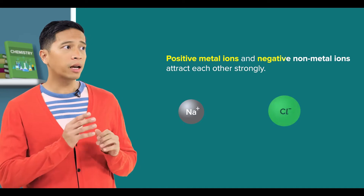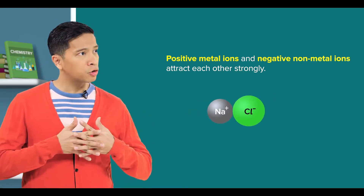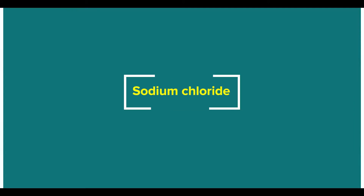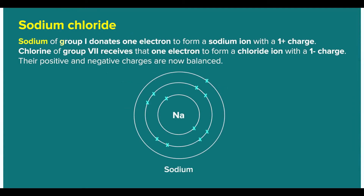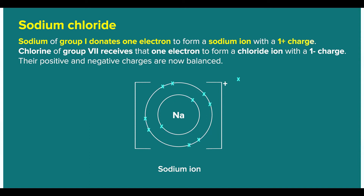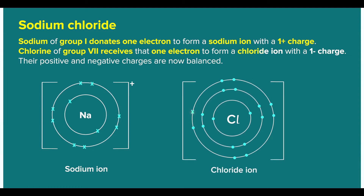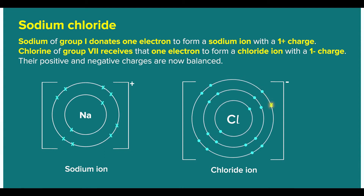Moving on, do you remember how ions interact with each other? I remember that positive metal ions and negative non-metal ions attract each other strongly. Good. Let's refresh our memory a little. Let's use sodium chloride as an example. Sodium of group 1 donates one electron to form a sodium ion with a positive 1 charge, while chlorine of group 7 receives that one electron to form a chloride ion with a negative 1 charge. Their positive and negative charges are now balanced.